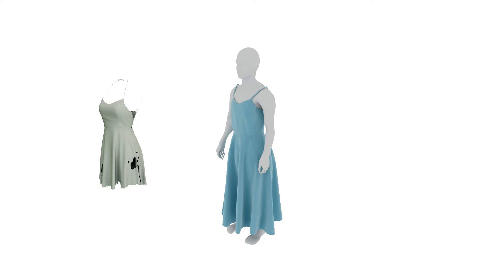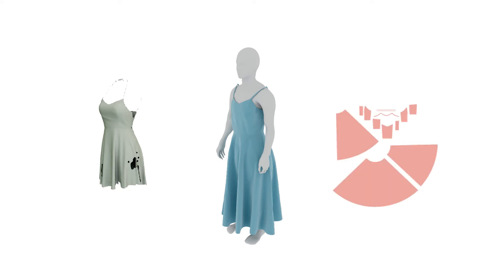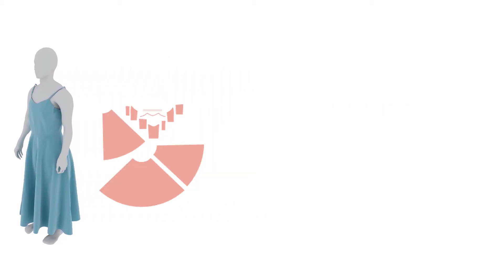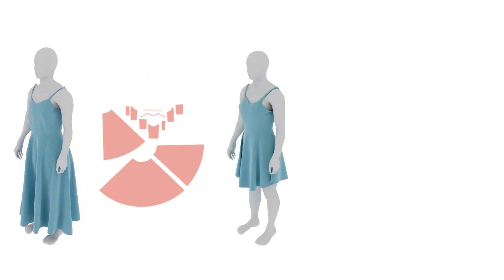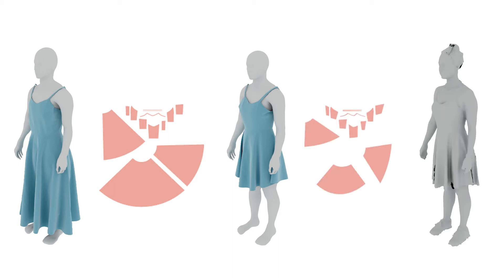We only need a single 3D shape with associated 2D garment panels for each category. Our method will then automatically compute the appropriate complex nonlinear scaling of these panels, resulting in a draped garment that closely matches the size of the clothing in the scan.